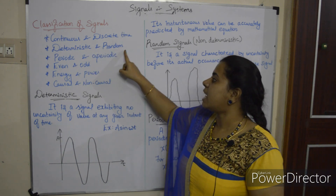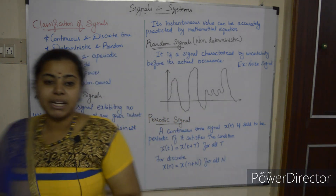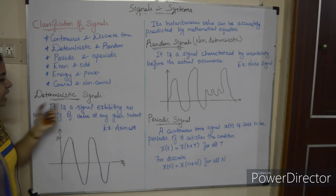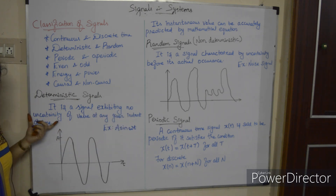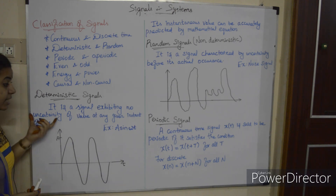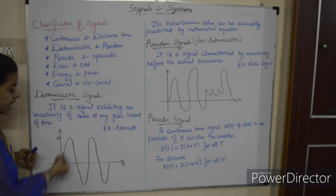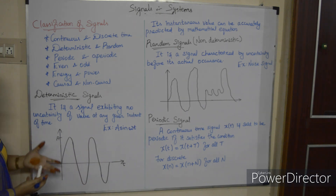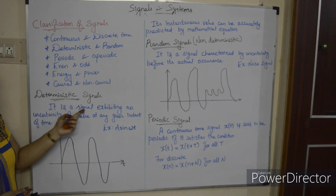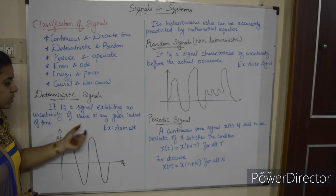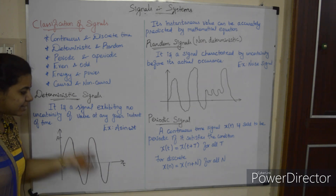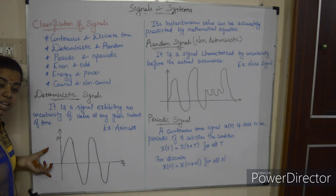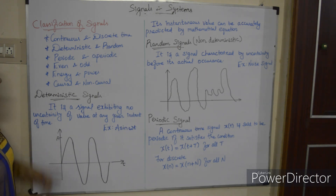Next, deterministic and random signals. Deterministic — what is meant by deterministic? It is a signal exhibiting no uncertainty of value at any given instant of time. No uncertainty means the value is certain. At any given time, you can define the signal without doubt. That is called a deterministic signal. It can also be expressed in mathematical form — that is called deterministic.